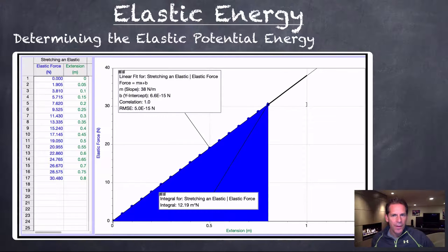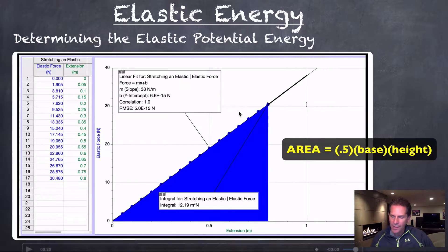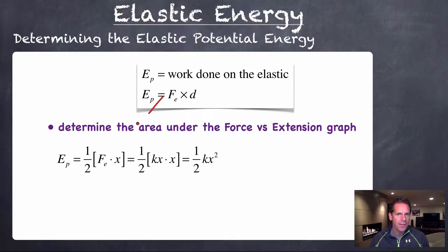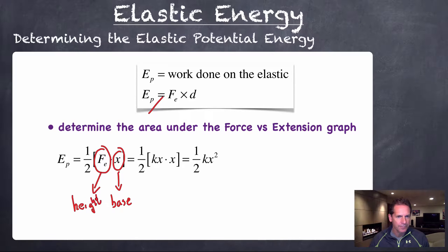Now the shape we're dealing with here is a triangle, and the area of a triangle would be one half times the base times the height. So again, we're focusing on the area underneath the graph. The potential energy would equal one half times the base times the height, and our base and our height are represented by Fe and x. So x is our extension, that would be the base of the triangle, and the elastic force would be the height of the triangle. Because Hooke's Law applies, the elastic force can be replaced with Kx. So Kx times x gives us Kx squared. So for the triangular shape that we've got, the expression of the potential energy is equal to one half Kx squared.